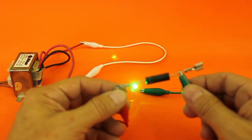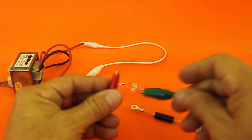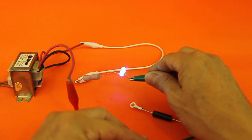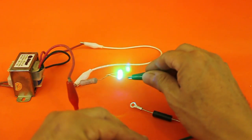If the diode is shorted, then we will have a situation like this. And both LEDs, the green and the blue, will turn on.